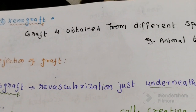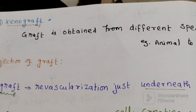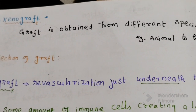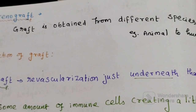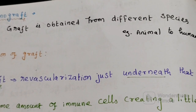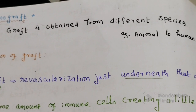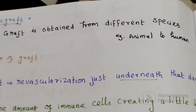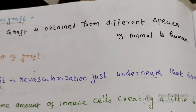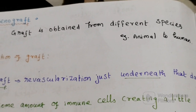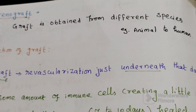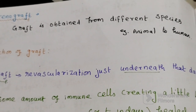Lastly, the most extreme situation is the xenograft. A xenograft is when a graft is obtained from a different species altogether and grafted to an individual — for example, from an animal to a human, such as from a chimpanzee to a human.